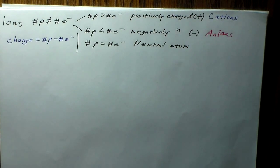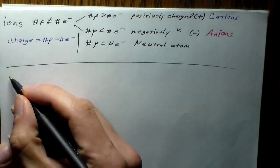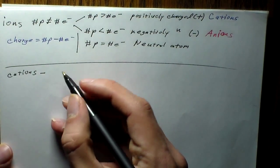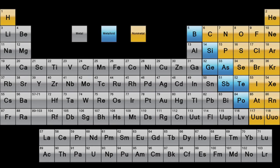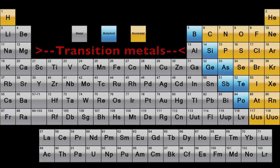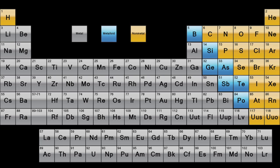Here are some useful trends. Cations are usually going to be metals — the alkaline metals, the alkaline earth metals, transition metals, and the lanthanides and actinides. The non-metals will be the anions. As for the metalloids, they usually don't form ionic compounds, so we can't put them in a category of either anions or cations.